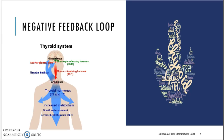As the thyroid cells are destroyed, production of thyroid hormones — triiodothyronine (T3) and thyroxine (T4) — is reduced. Since there are lower levels circulating in the body, the negative feedback loop tells the hypothalamus to release more thyrotropin-releasing hormone (TRH), which triggers the pituitary gland to release more thyroid-stimulating hormone (TSH). Unfortunately, the thyroid gland cannot keep up. TSH then stimulates hypertrophy and hyperplasia of the thyroid gland.